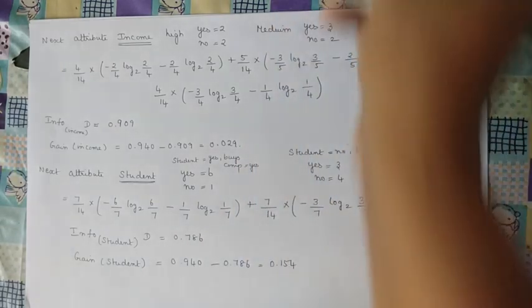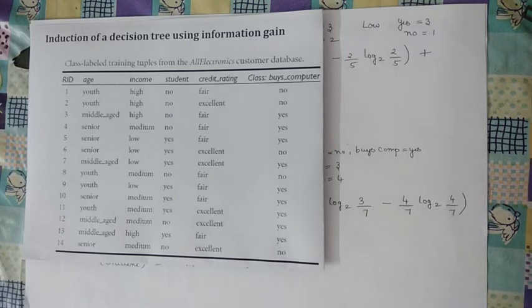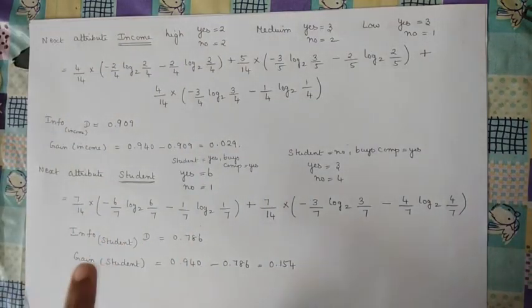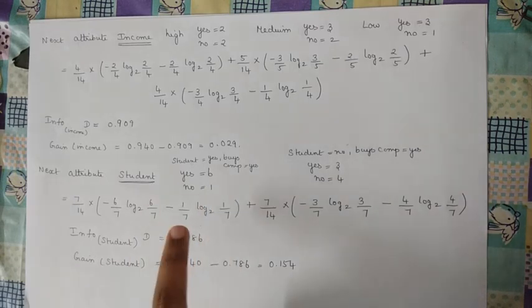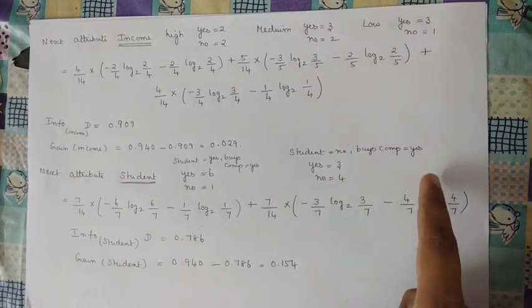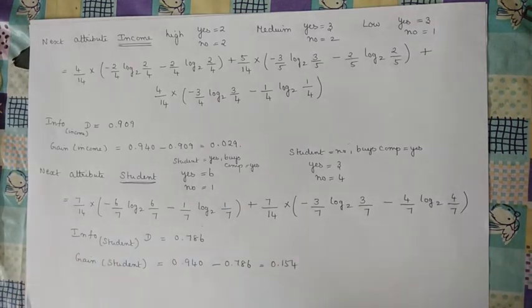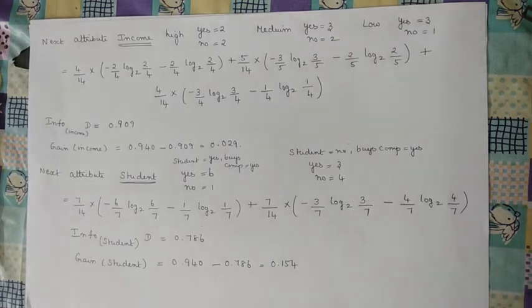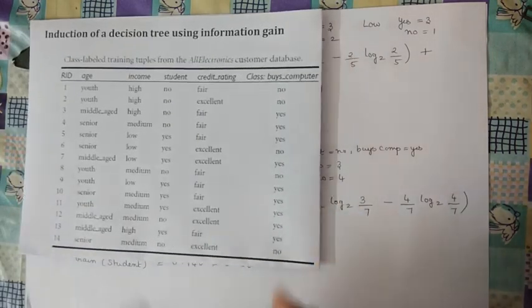Moving on to the third attribute — student — which has two categories: yes and no. Students who buy: 6; students who do not buy: 1. Non-students who buy: 3; non-students who do not buy: 4. Substituting those values gives Info_student(D), and then Gain(student) = Info(D) − Info_student(D) = 0.154.